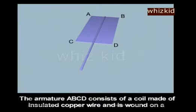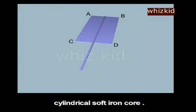two carbon brushes. The armature ABCD consists of a coil made of insulated copper wire and is wound on a cylindrical soft iron core.